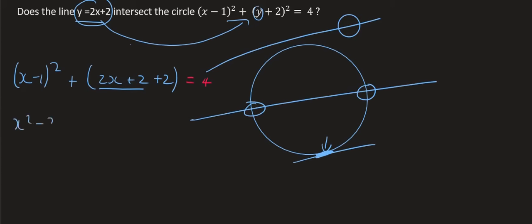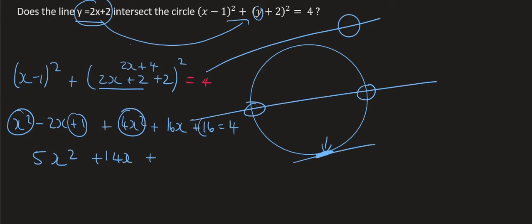So that's going to be x squared minus 2x plus 1 plus this part here. This part inside the bracket is going to be 2x plus 4, and if we multiply that out that would give us 4x squared plus 16x plus 16 equals to 4. I'm then going to put the x squareds together, so that's going to give us 5x squared, and the x's together that's going to give us 14x. I must remember this plus 1 plus 16, that's 17. If we bring the 4 over that's going to give us positive 13.